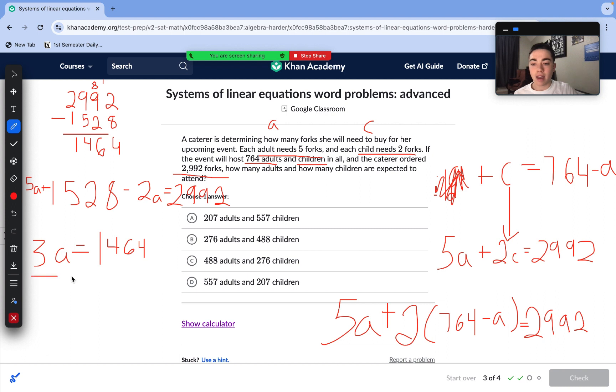In order to isolate our A variable, we need to divide both sides by 3. And now we do 1,464 divided by 3. Long division style. Of course, this is my favorite when doing division manually. 3 goes into 14 four times. 3 times 4 is 12. 3 goes into 26 eight times. 3 times 8 is 24. 3 goes into 24 eight times. So we're left with our number of adults, A equals 488. So there are 488 adults, which matches answer choice C. Answer choice C is the correct answer.